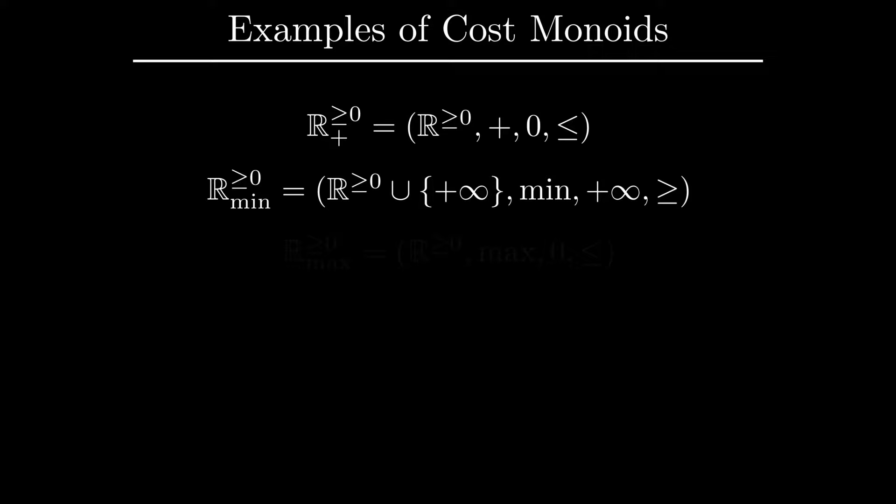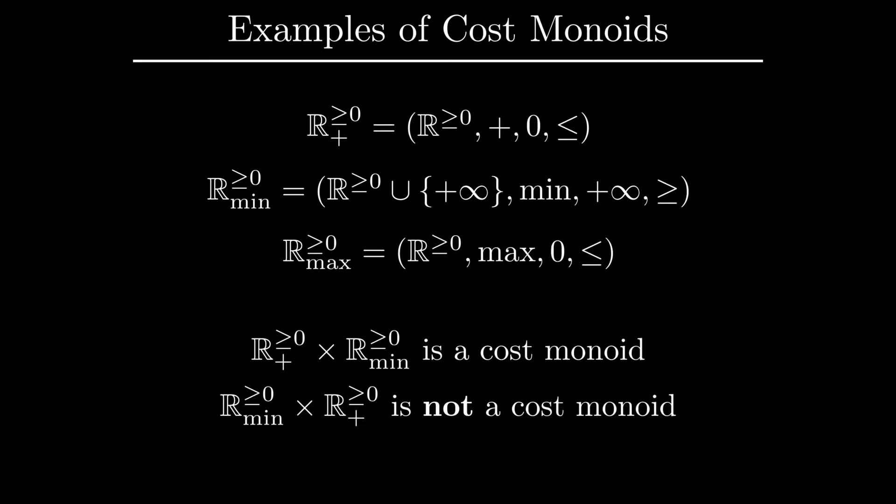A closely related cost monoid is R_max, where the operation is taking maximum, and zero is the smallest element.